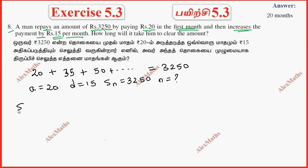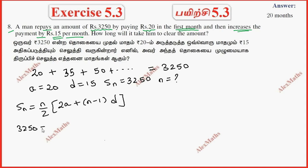Using the SN formula: SN equals n by 2 into 2A plus n minus 1 into d. So 3,250 equals n by 2 into 2 times 20 plus n minus 1 into 15.